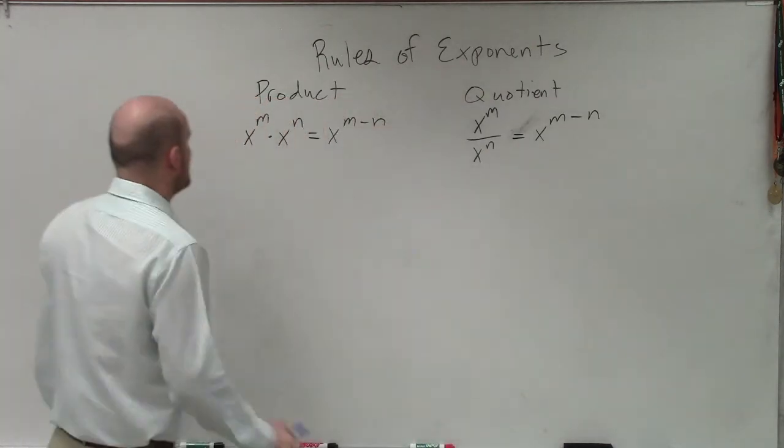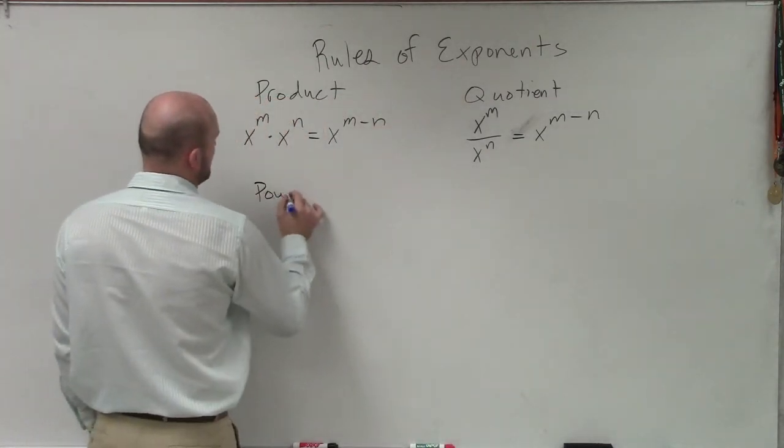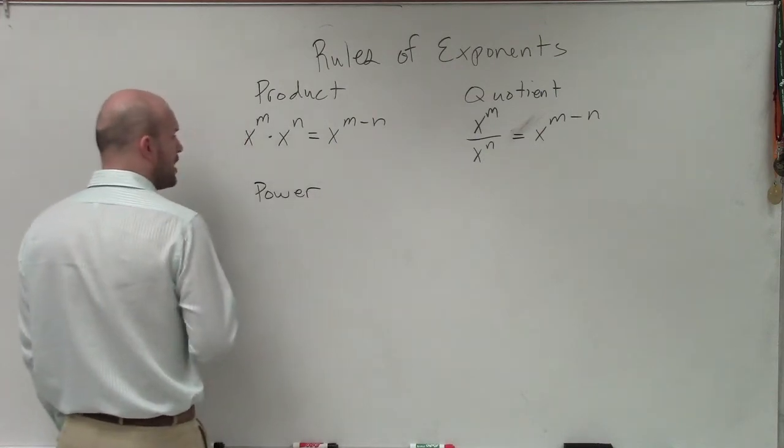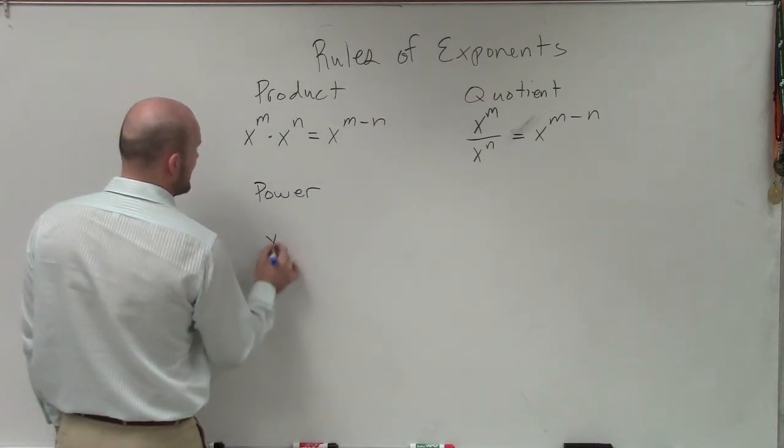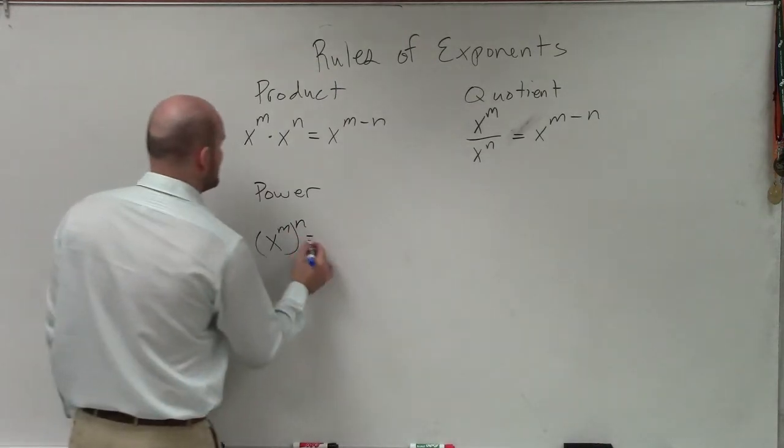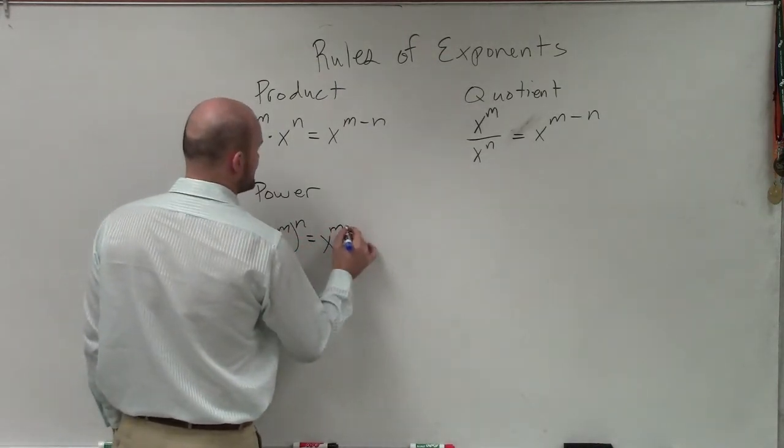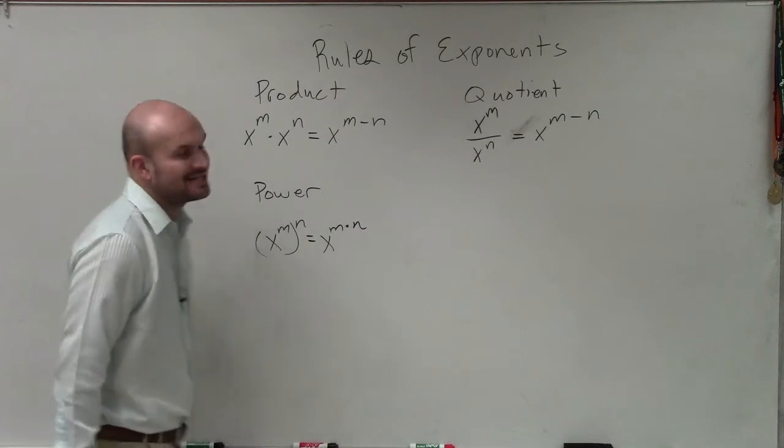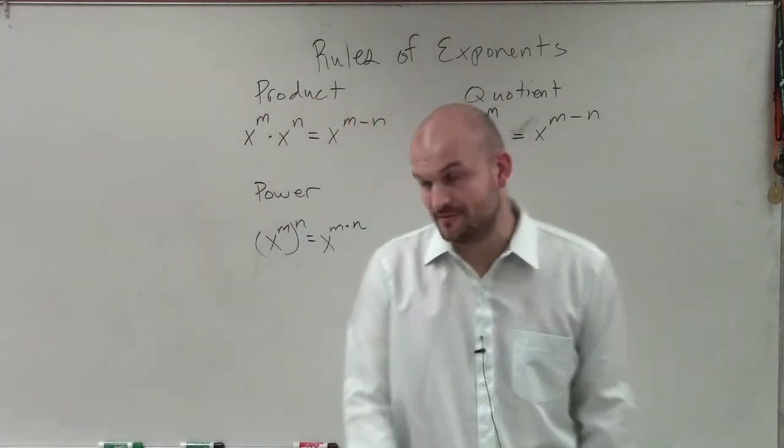This also works for what we call the power rule. The power rule just states, if I have x to the m raised to another power, then that's going to be the product of my two powers. So that's going to be x to the m times n.